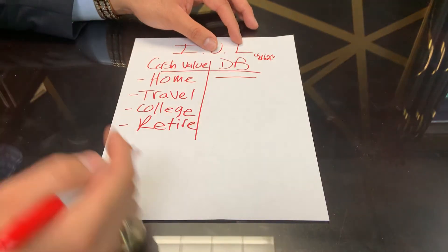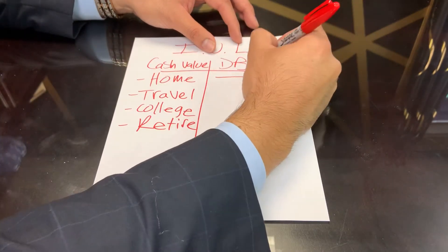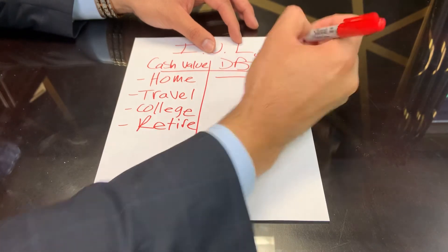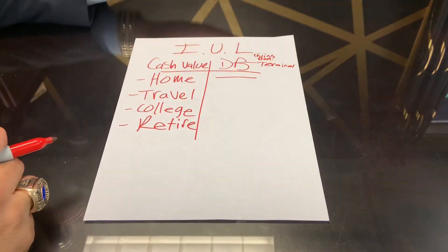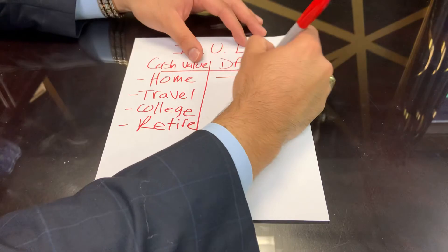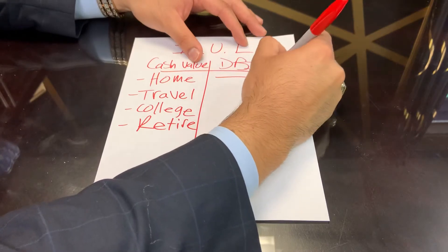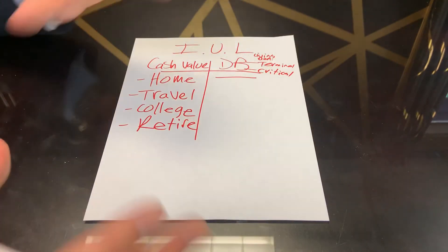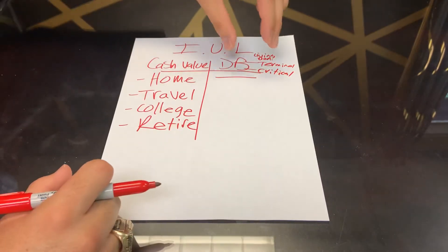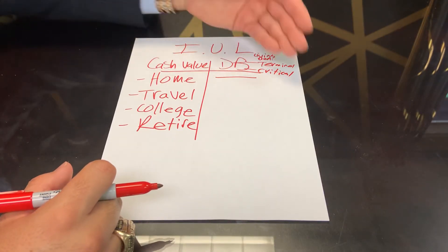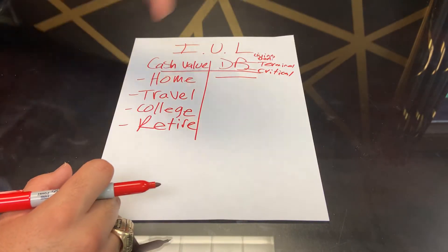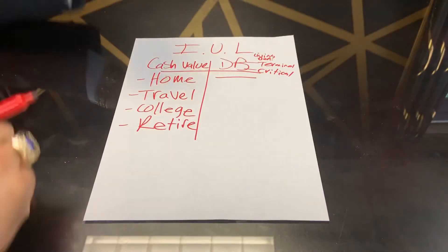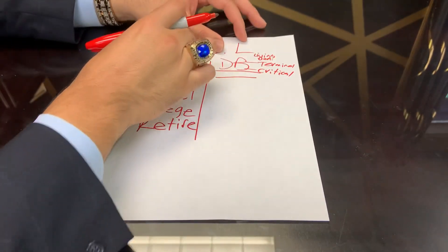What does that mean? It means God forbid somebody gets a terminal illness like cancer, or something critical like a brain seizure, heart attack, stroke, or anything of that nature — we can use the life insurance money, cash it out for medical expenses and medical treatments.